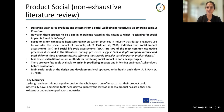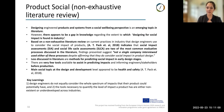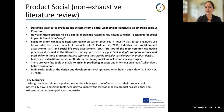Based on a non-exhaustive literature review, we found that while social impact assessments and social life cycle assessments are the most common processes discussed in the literature to evaluate the social impact of products, not a single company interviewed used either of these processes. There is also very little discussion in the literature on methods for predicting social impact within the early design stages, and very few tools that assist in predicting impacts before production. The main social topic discussed at a design and development level appears to be health and safety — findings aligned with what we found in the 21 industry interviews.